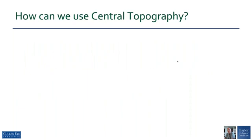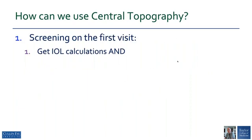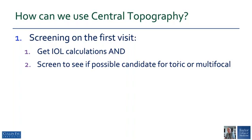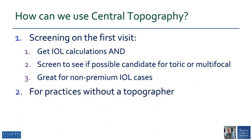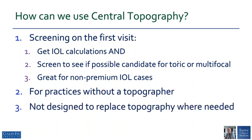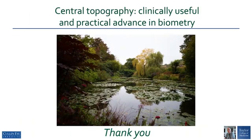How can we use central topography in practice? The obvious option is to use it at the first visit — you can get lens calculations, screen whether the patient might be a candidate for a toric or multifocal IOL, and it's wonderful for non-premium IOL cases where you get both biometry and topography without any additional steps. It's also excellent for practices without a topographer, adding a new dimension to patient care. It is not designed to replace topography where it is indicated or needed. Central topography is an exciting new innovation that is clinically useful and a wonderful practical advance for biometry.